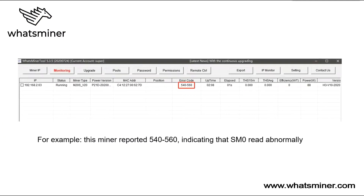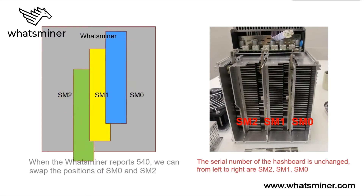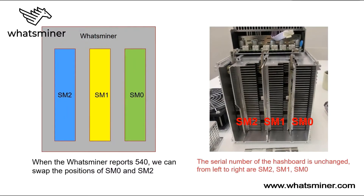For example, Whatsminer reported error code 5405-60, indicating that SM0 is abnormal. The serial number of the hash boards is numbered from left to right: SM1, SM0. When the Whatsminer reports 5405-60, we can swap the positions of SM0 and SM2.